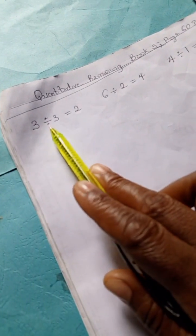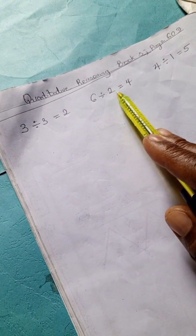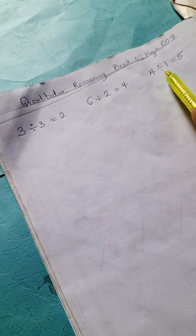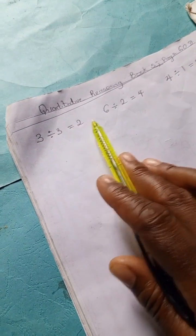We have 3 divided by 3 equals 2, and here 6 divided by 2 equals 4, here 4 divided by 1 equals 5. But if you look at it, actually in mathematical operations, 3 divided by 3 is not 2.